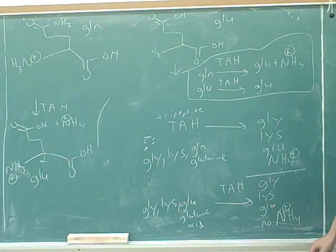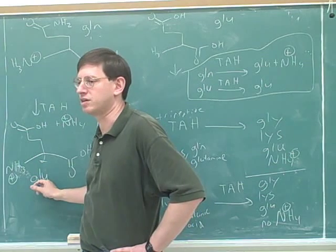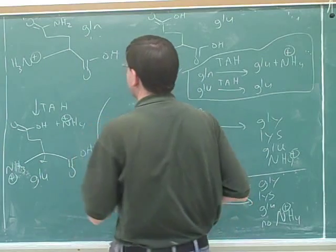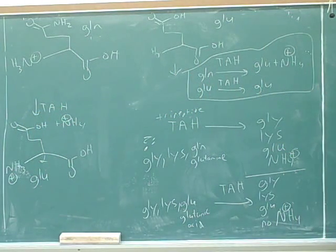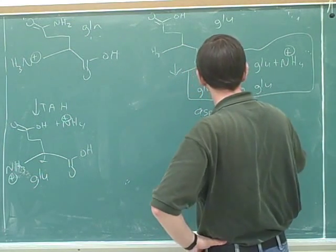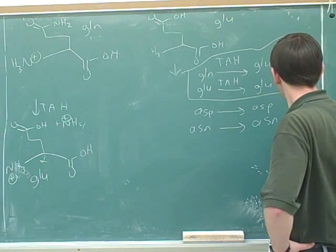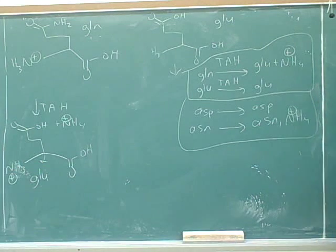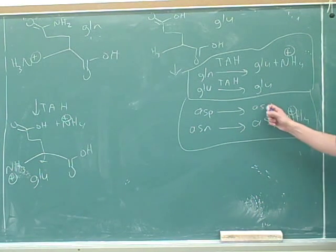Everything we just said is also true for aspartic acid and asparagine — they're the same relationship, just with one fewer carbon in the chain. NH4+ is the marker: asparagine will never be a product of total acid hydrolysis; it will always look like aspartic acid plus ammonium, which tells us we started with asparagine. If there's no ammonium, we must have started with aspartic acid. So the four possibilities going backwards: ASP with no NH4+ means it was ASP to start with; ASP with NH4+ means it was ASN.